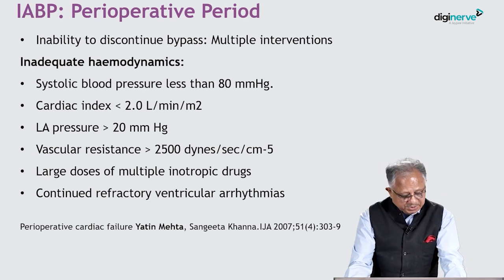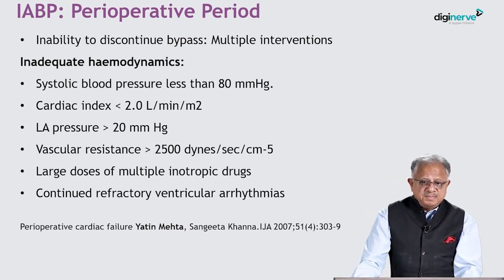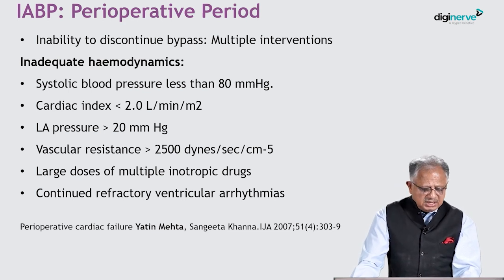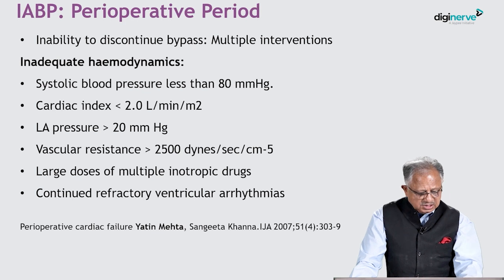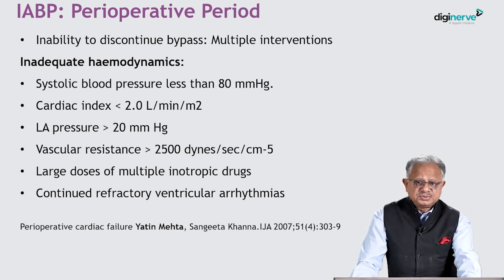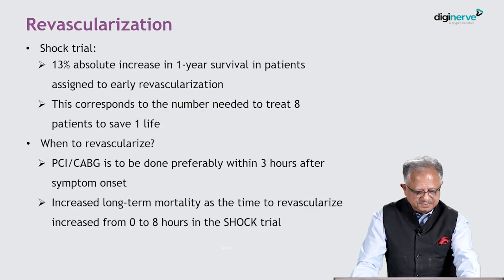Regarding IABP in the perioperative period: when coming off cardiopulmonary bypass, if the patient requires high inotropes, cardiac index is low, filling pressures are high, echo performance is not good, and SVR is high — that is the time to put in the balloon. Do not wait for organ failure to set in.